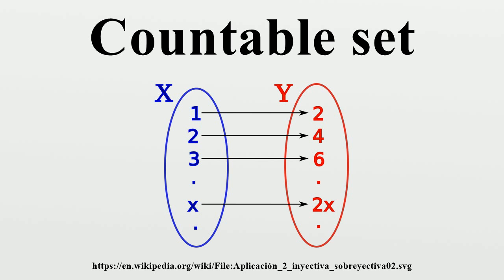Likewise, the set of all ordered pairs of natural numbers is countably infinite, as can be seen by following a diagonal path. The resulting mapping covers all such ordered pairs. Interestingly, if you treat each pair as being the numerator and denominator of a vulgar fraction, then for every positive fraction we can come up with a distinct natural number corresponding to it. This representation includes the natural numbers, since every natural number is also a fraction n/1. So we can conclude that there are exactly as many positive rational numbers as there are positive integers. This is true also for all rational numbers.